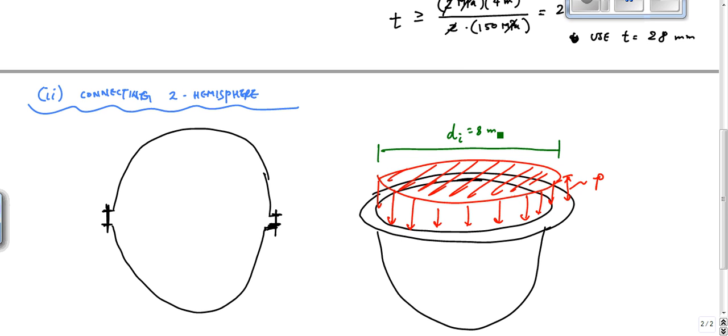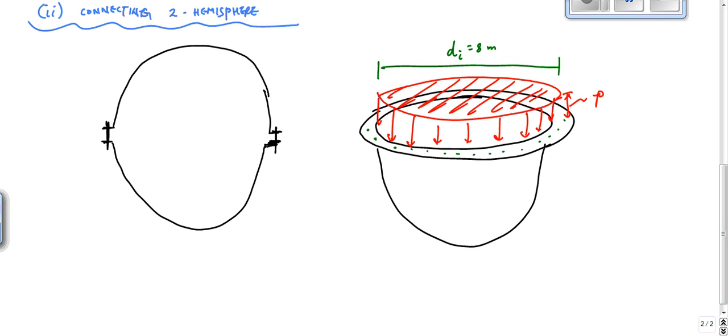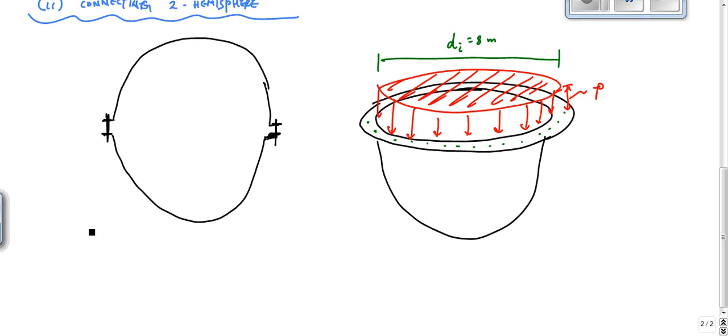And I want to know how many bolts I need to make sure I hold this together within the allowable. So what I have is the basic design relationship. Let's say the force applied due to the pressure has to be less than or equal to the force allowed in one bolt times the number of bolts.